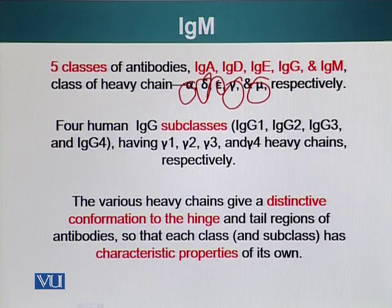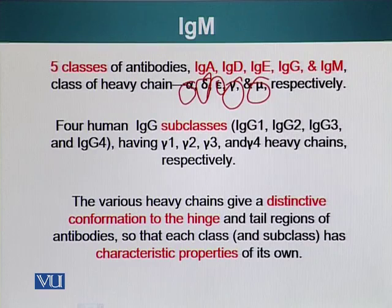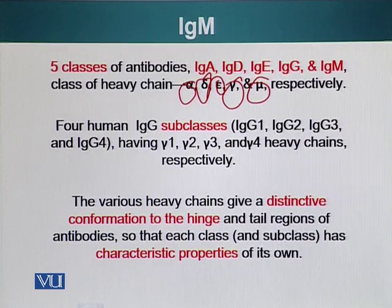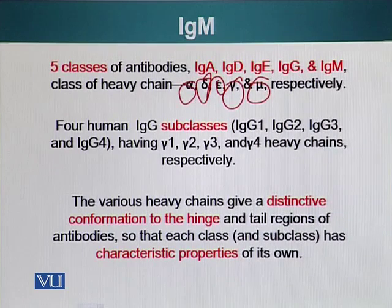There are also subclasses of these antibody classes. For example, IgG has four subclasses — IgG1, IgG2, IgG3, and IgG4 — having gamma one, two, three, and four heavy chains respectively. The various heavy chains give a distinctive conformation to the hinge and tail regions, and subclasses have distinct properties. Their FC region can also bind receptors present on the surface of different cells.